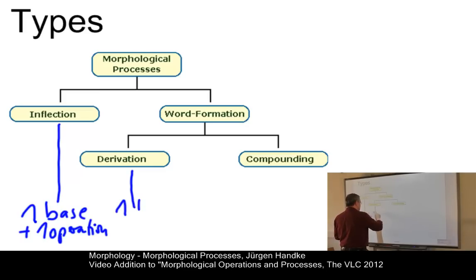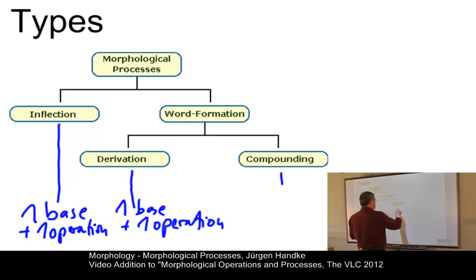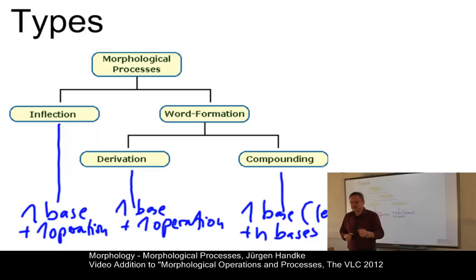In derivation, we do exactly the same as we did in inflection. We have one base form and one operation that modifies the base somehow. As you would see, sometimes we have, in inflection as well as in derivation, the possibility of applying two or even more operations at the same time. And in compounding, we formally, or compounding is formally defined as a combination of one base, which you might in this case also call lexeme, plus N base forms that are added to this base form. So, this is the formal definition of the main types of morphological process.